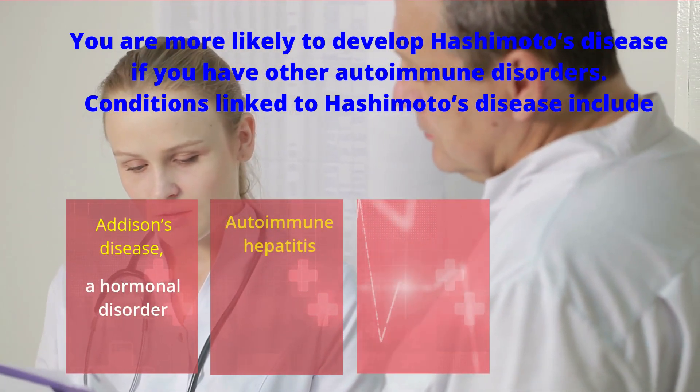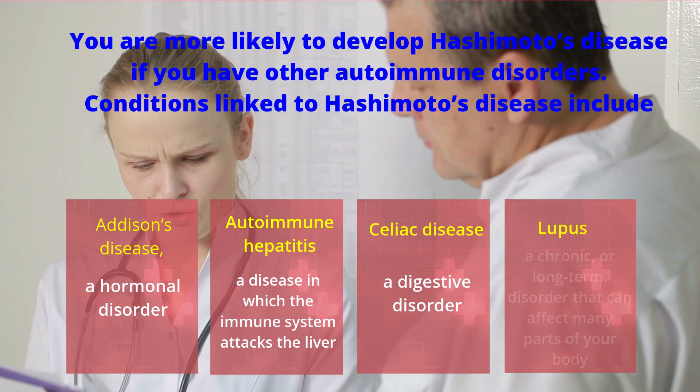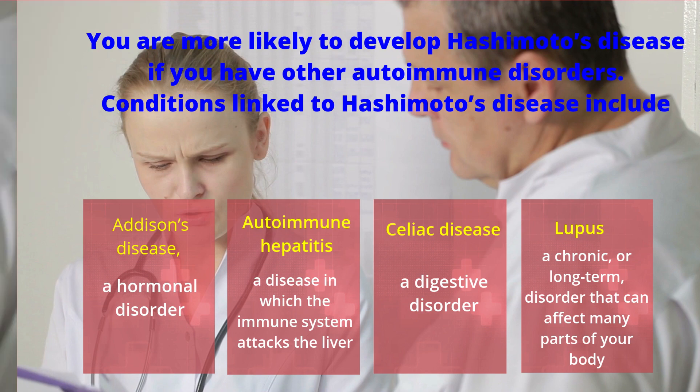You are more likely to develop Hashimoto's disease if you have other autoimmune disorders. Conditions linked to Hashimoto's disease include Addison's disease, which is a hormonal disorder; autoimmune hepatitis, which is a disease in which the immune system attacks the liver; celiac disease, which is a digestive disorder; and lupus, which is a chronic, long-term disorder that can affect many parts of your body.